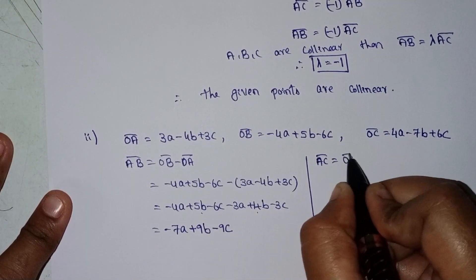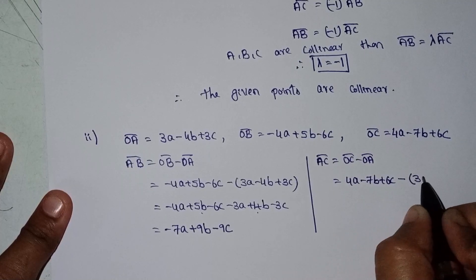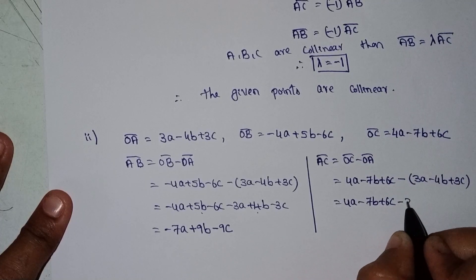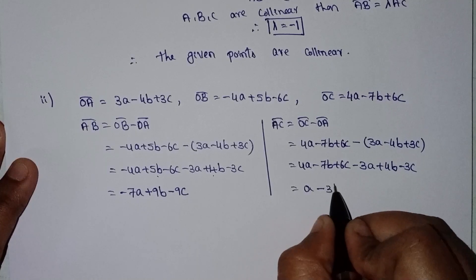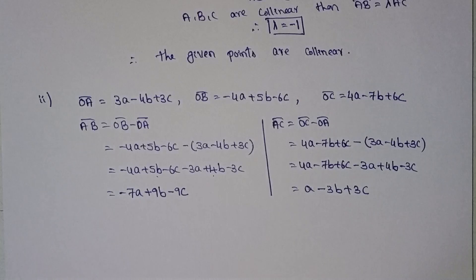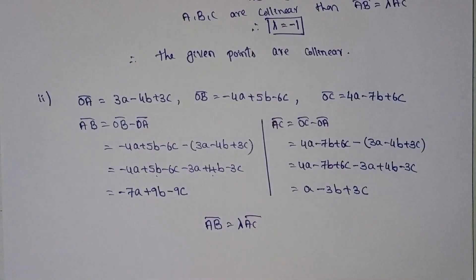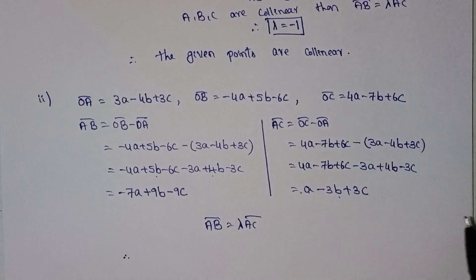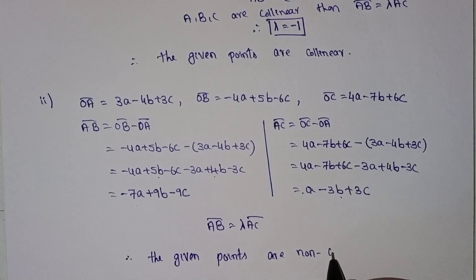Now computing AC: OC minus OA gives 4a minus 7b plus 6c minus (3a minus 4b plus 3c), resulting in a minus 3b plus 3c. Since AB cannot be expressed as lambda times AC with a consistent scalar, the given points are non-collinear.